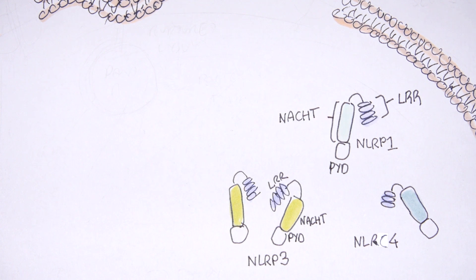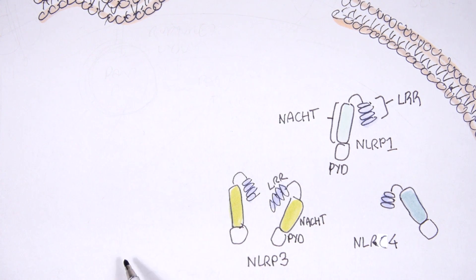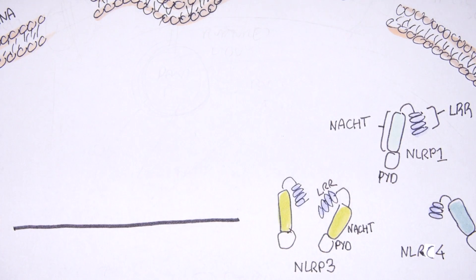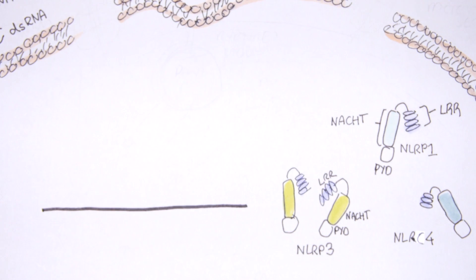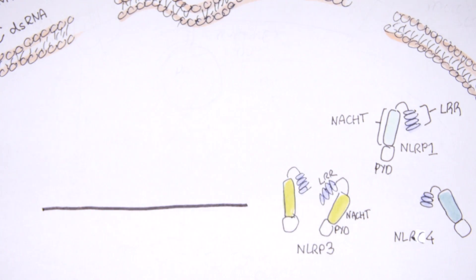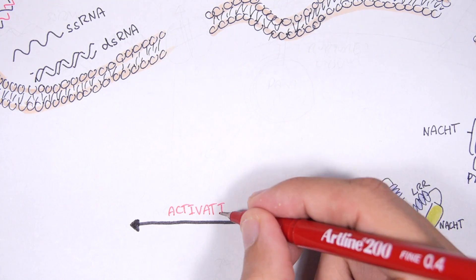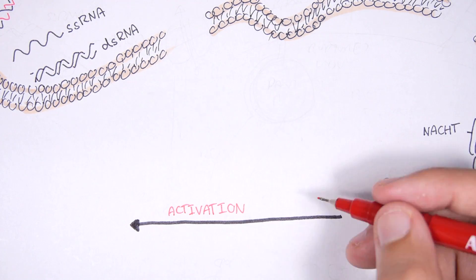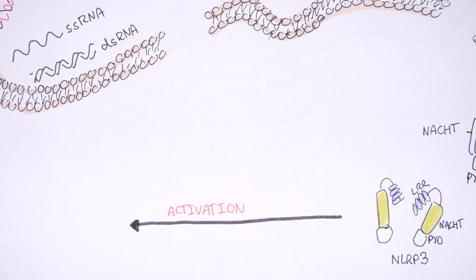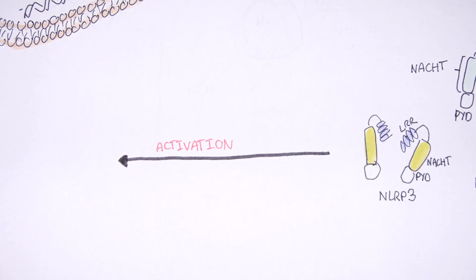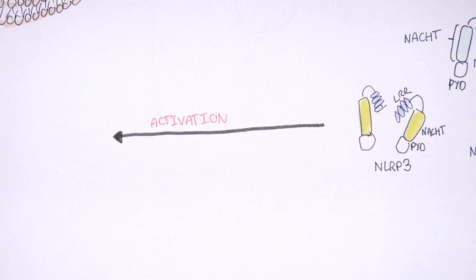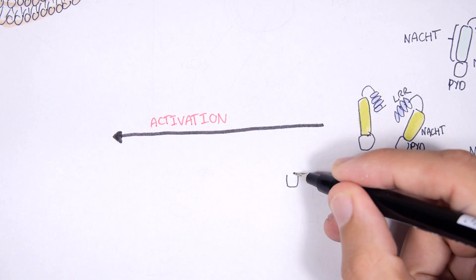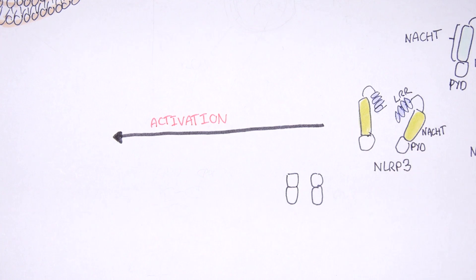NLRP3 is found as monomers in an inactive form, like all other NOD-like receptors. It is inactive because the leucine-rich repeats are blocked by chaperone proteins. There are many things that can activate NLRP3, though it is not fully understood exactly how.